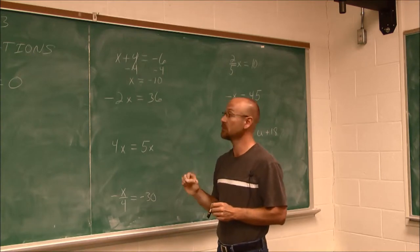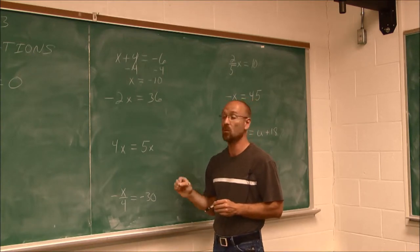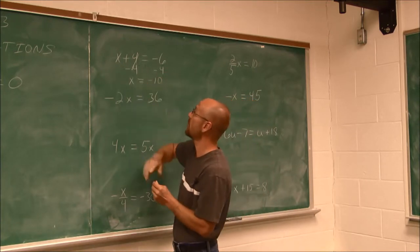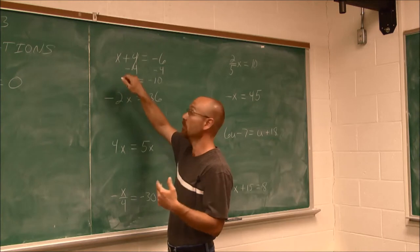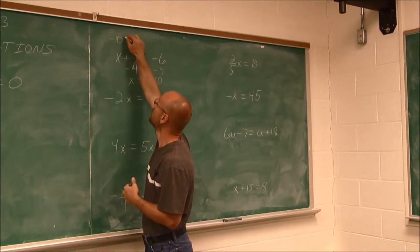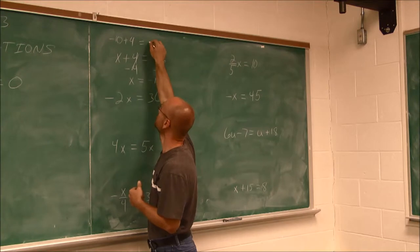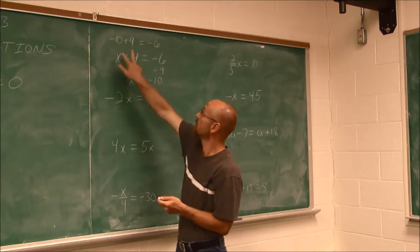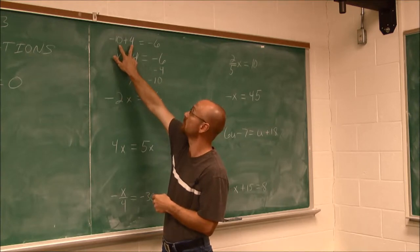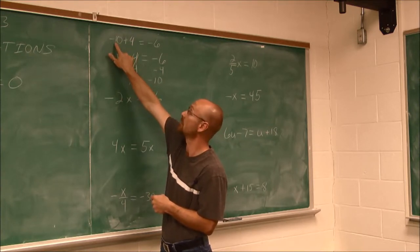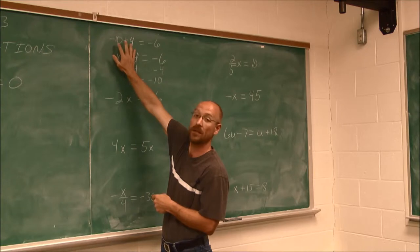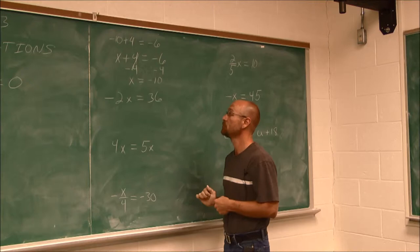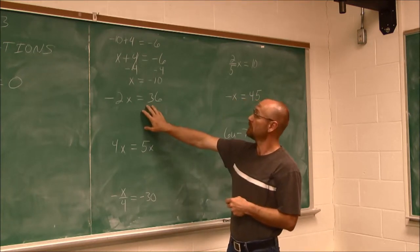The nice thing about equations is we can always check our work — we can know we have the right answer. I'm going to take negative 10 and put it back in as an evaluation. Negative 10 plus 4 is negative 6. Is this a true statement? These have different signs, so I find their difference. The difference of 10 and 4 is 6, and the larger value is negative, so that's negative 6. Is negative 6 equal to negative 6? Yes, it is.